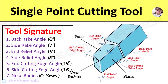Next is tool signature for single point cutting tool. The convenient way to specify tool angles by use of a standardized abbreviated system is known as tool signature. It indicates the angles that a tool utilizes during the cut and specifies active angles of the tool normal to the cutting edge. Here are the seven elements that comprise the signature of a single point cutting tool, always stated in the following order. A typical tool signature is shown here.